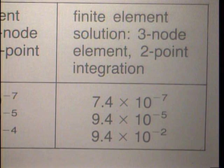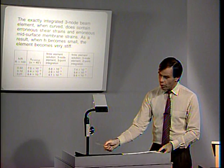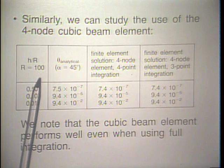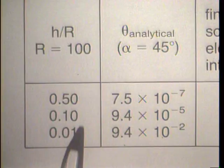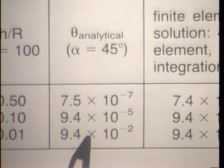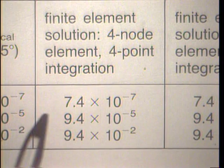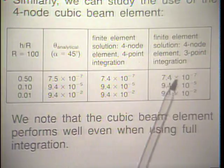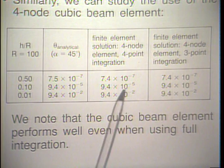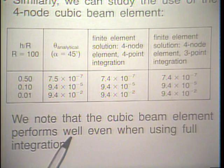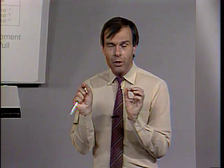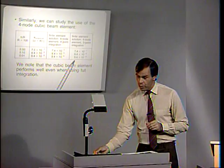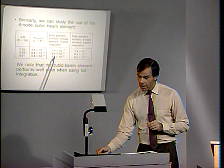For the four-node cubic beam element, we find that the four-node element with four-point integration gives very good results, and three-point integration also gives excellent results. The cubic beam element performs well even when using full integration — it is not susceptible to membrane and shear locking. However, note that the third-point nodes must be exactly at the third point of the elements; once we start shifting these nodes, we would not get as good results.